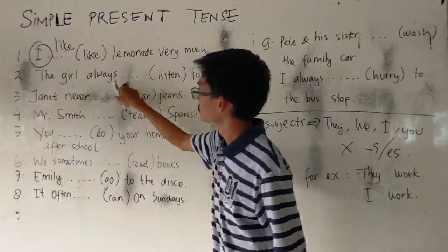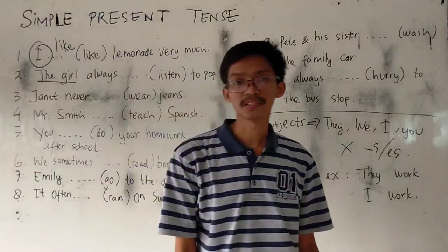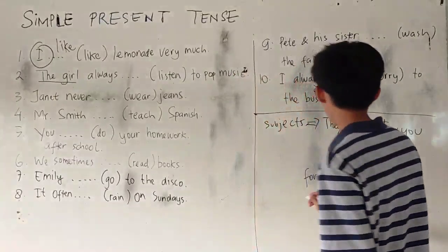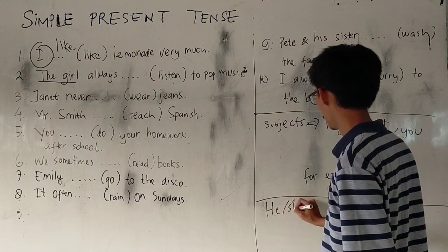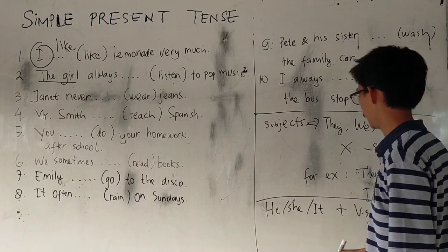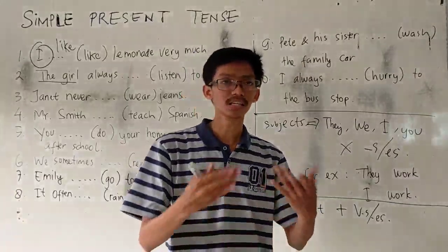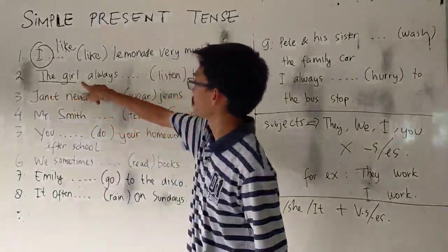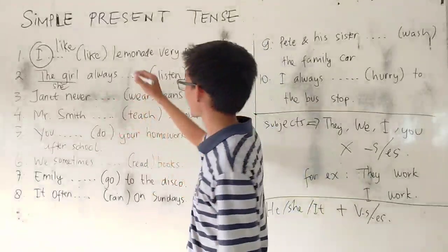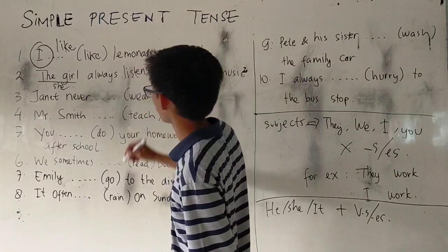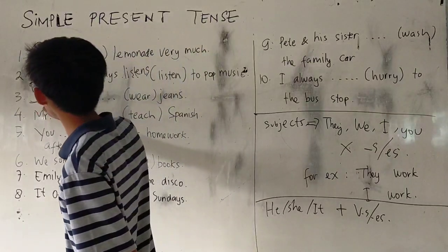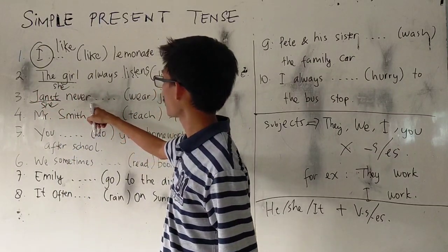Number two: the girl. Because it's only one person, you can change 'the girl' into 'she.' Remember, if the subjects are he, she, or it, you have to add S or ES to the verb. She works, he works, it works. So: the girl always — she — listens. Yes, it's 'listens.' Number three: Janet never — it's a girl's name, so it's a 'she.' Janet never wears.